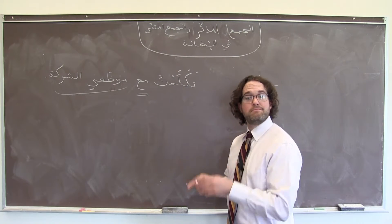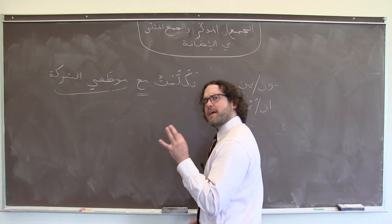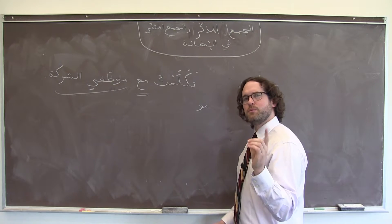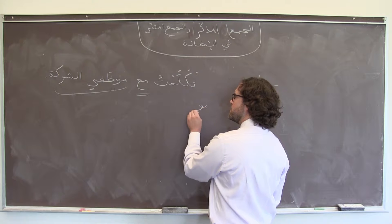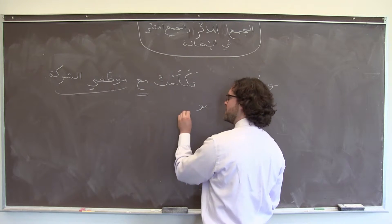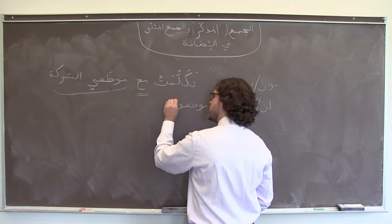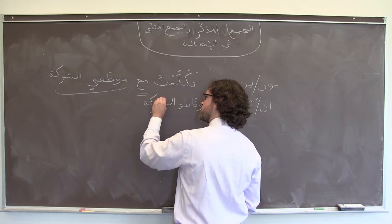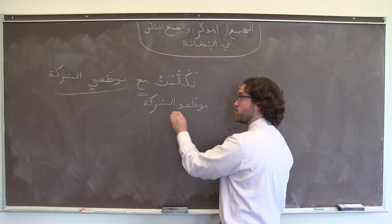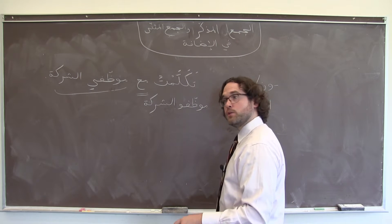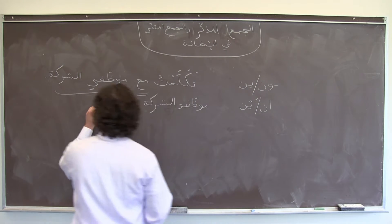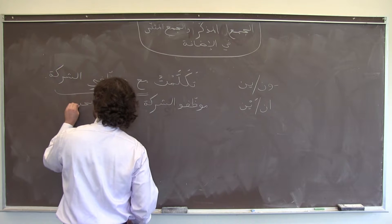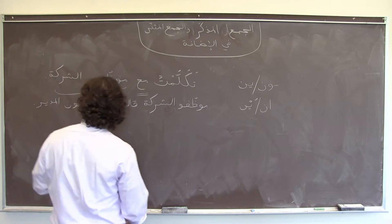Let's look at another example: 'The employees of the company said that they like the director.' We'll make that a جملة إسمية. The plural of موظف here is going to be مرفوع, so I'm going to add واو نون at the end — موظفون. But because I know I have an إضافة and موظفون is the first word with another one coming, I just chop off the نون at the end: موظفو الشركة قالوا إنهم يحبون المدير.